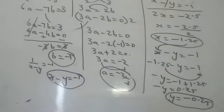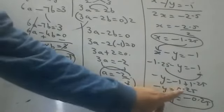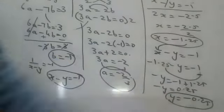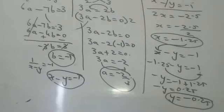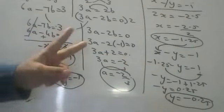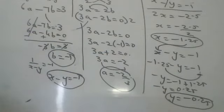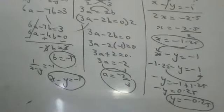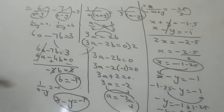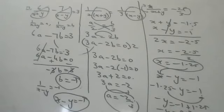So x = minus 1.25 and y = minus 0.25. In this type of sum you solve the linear equations two times — once for a and b, and once for x and y. You must be very careful; even with experience I made a mistake twice. One wrong step means losing marks, so stay focused.